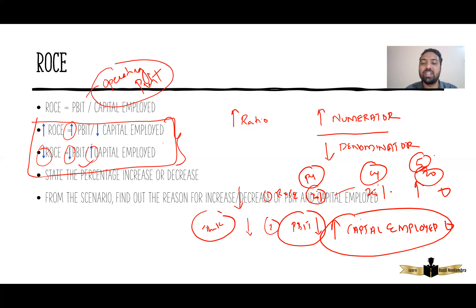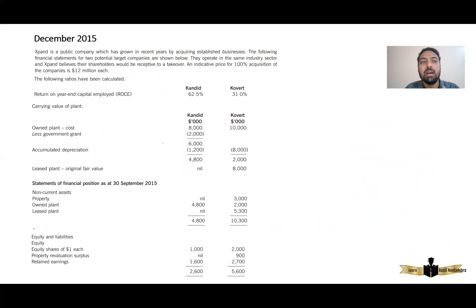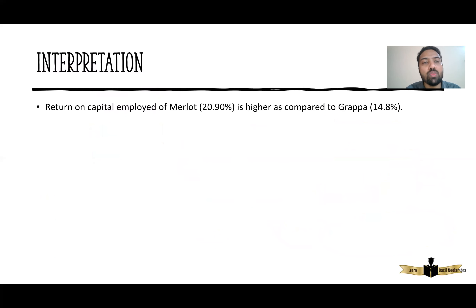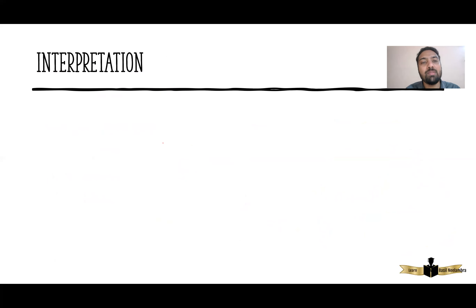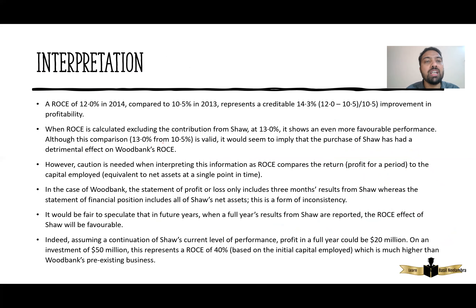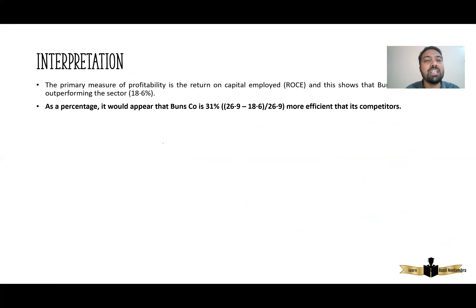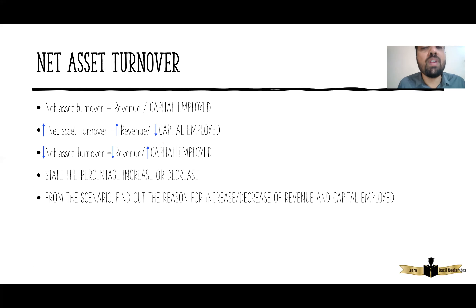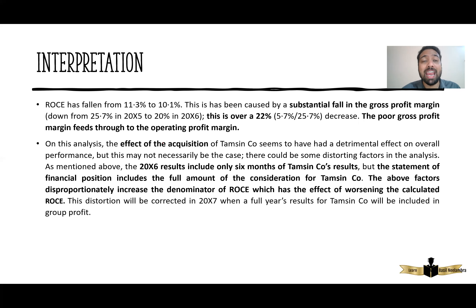From the scenario, find out the reason for increase or decrease of PBIT and capital employed. That's all for this video, and I'll be uploading the next part, where I will be practicing past question papers — December 2019, September/December 2017, December 2008, December 2009, December 2012, June 2014, September/December 2018, and September 2016. We'll be going through around eight to nine past question papers and applying what you have learned.